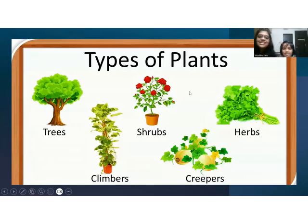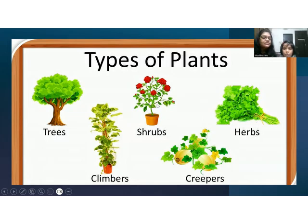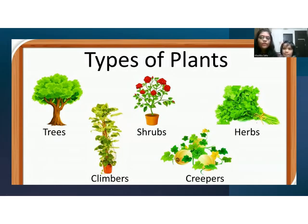So kids, these are the different types of plants. Then what is this, Advika? Shrubs. Shrubs. Then trees. Then climbers. Then creepers. So in today's video, we are going to discuss about all the categories of plants one by one.